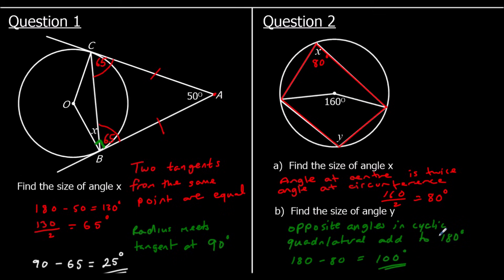We could have also worked it out differently: angles around a point make 360 degrees, so 360 minus 160 is 200, and then used the angle at the center is twice the angle at the circumference again to get the same answer.